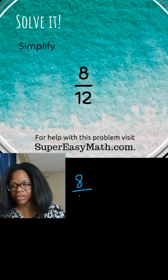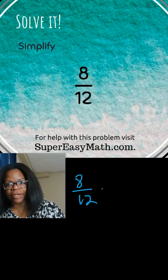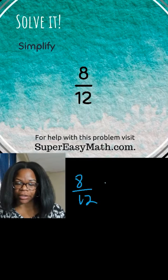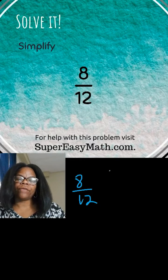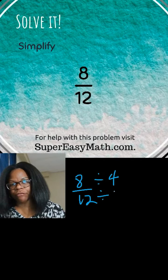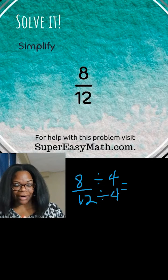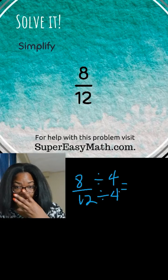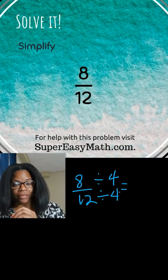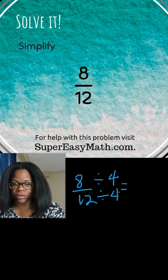So when I have a problem like this, all I'm going to do is figure out what number can go into both my numerator and denominator. I know that four can go into both. There are other numbers, but four is the largest, so it will allow me to get to the most simplified answer the quickest. If I were to choose a number that wasn't as large as four, I would have to simplify more than once.